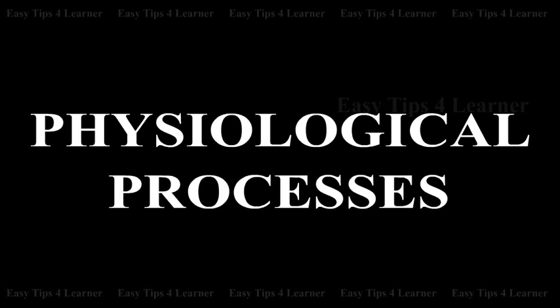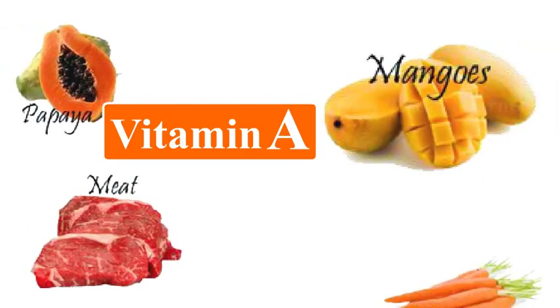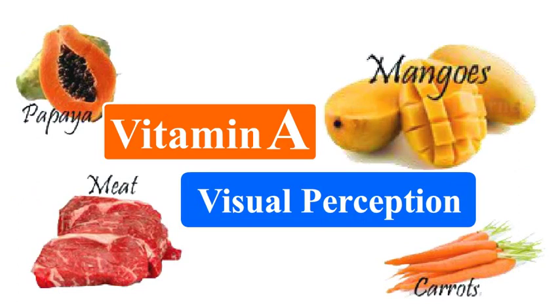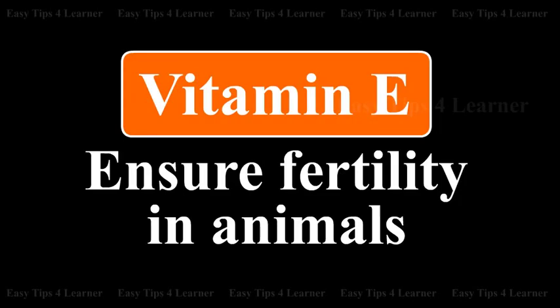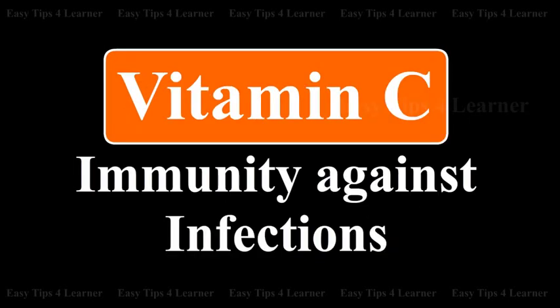The most important functions of vitamins include physiological processes. Vitamin A plays a very important role in visual perception. Vitamin E might ensure fertility in animals. The clotting of blood is aided by vitamin K. Vitamin C provides immunity against infections and it may also support processes of growth.